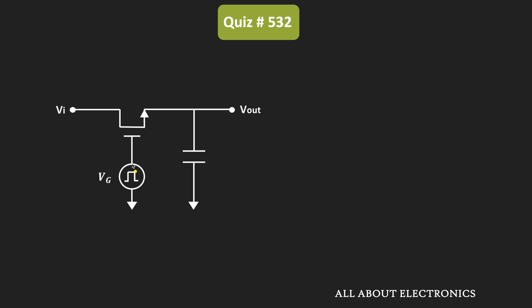In this circuit, to use the MOSFET as a switch, we should know how to turn ON and OFF this MOSFET — or basically, how to apply the control voltage to the MOSFET such that it operates as a switch.